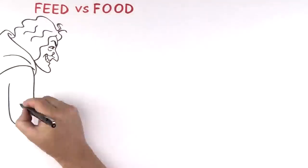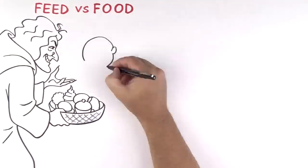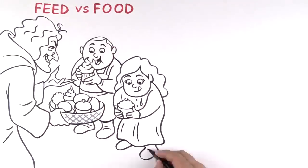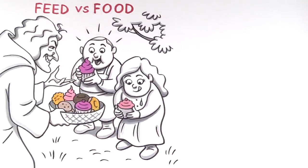The witch from Hansel and Gretel knew the difference. She wasn't giving those kids a balanced diet for a long, healthy life. She wanted them fat fast. She fed them feed.